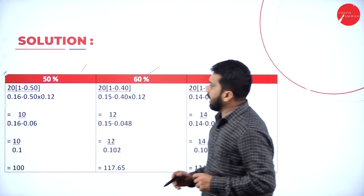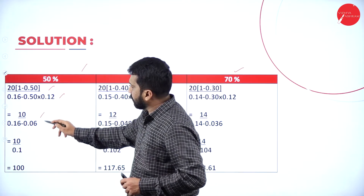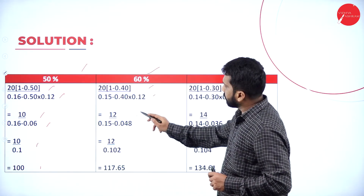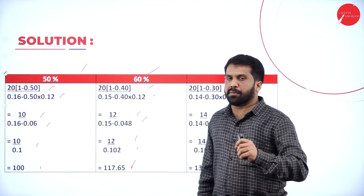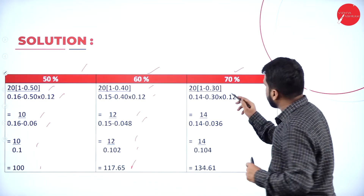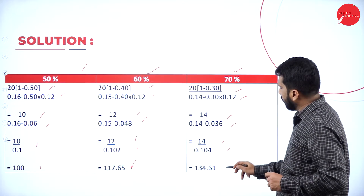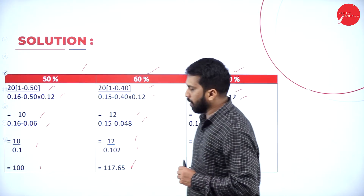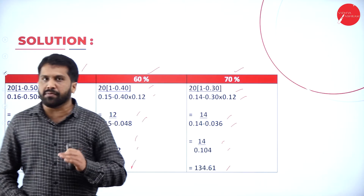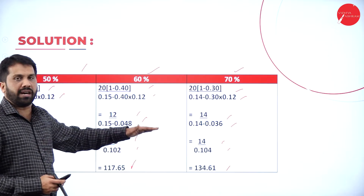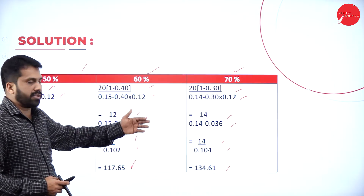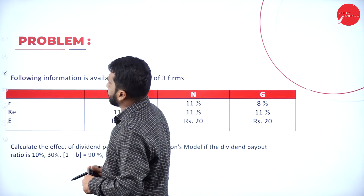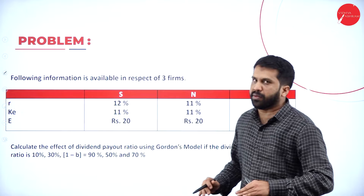Apply the formula as per the calculation. The answer for 50% payout is 100, for 60% it is 117.65, and for 70% it is 134.61. You can do this one by one like a table, or calculate without a table also. So once we are done with this, your previous problem is completed.